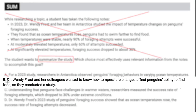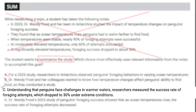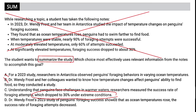Choice B gives us the researchers — this time we actually get a name, which is even better. We get what they wanted to know and that they conducted a study, but again we do not have the result. B is out. Choice C mentions understanding that penguins face challenges, and researchers measured the success rate which dropped to 30% under extreme conditions. It seems like we get a result, but this is a very specific detail — we're looking for a more holistic view of the result.